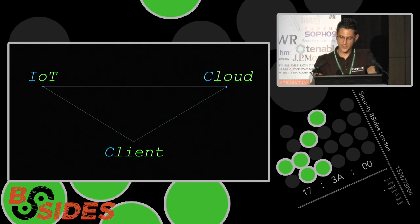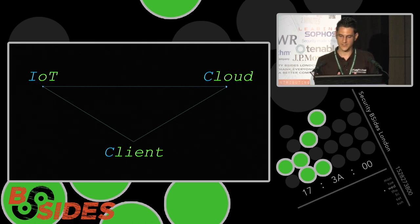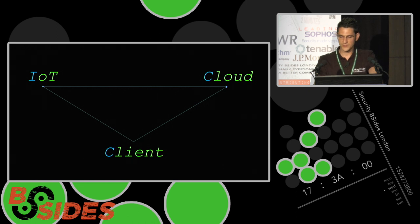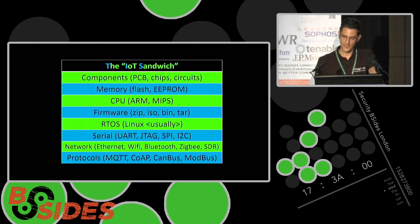Touching briefly on IoT architecture: we don't just talk about the device itself. A typical IoT system has one, two, or three components — a client such as a web browser or smartphone app, the device itself, and potentially cloud communication between any of these components.